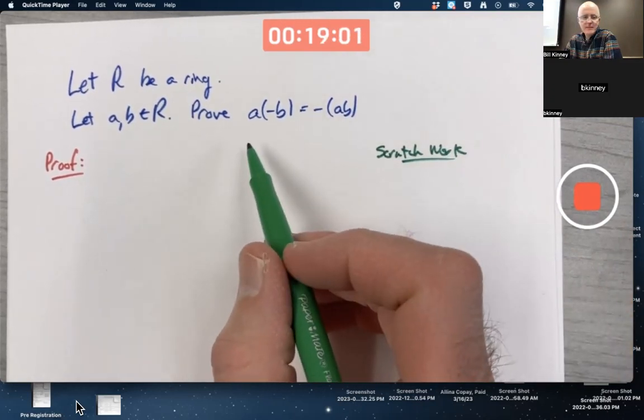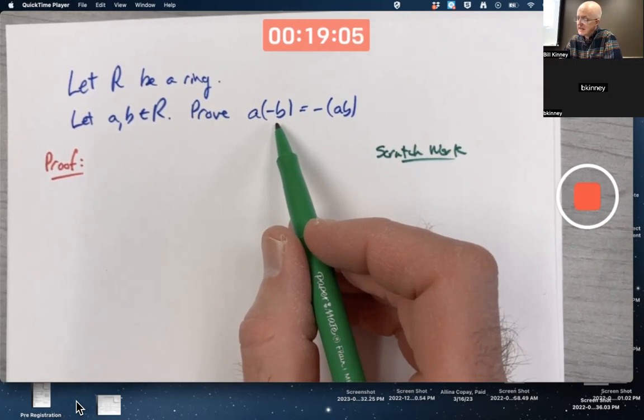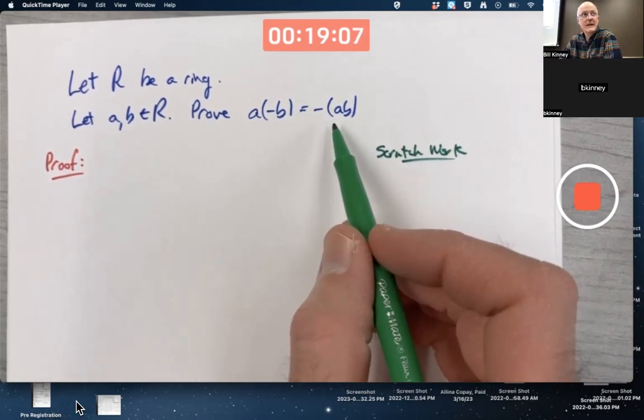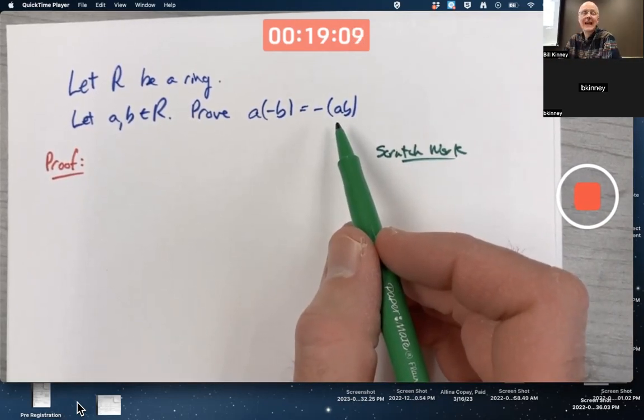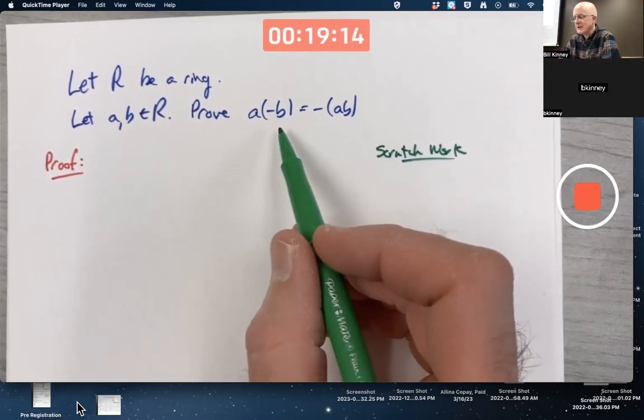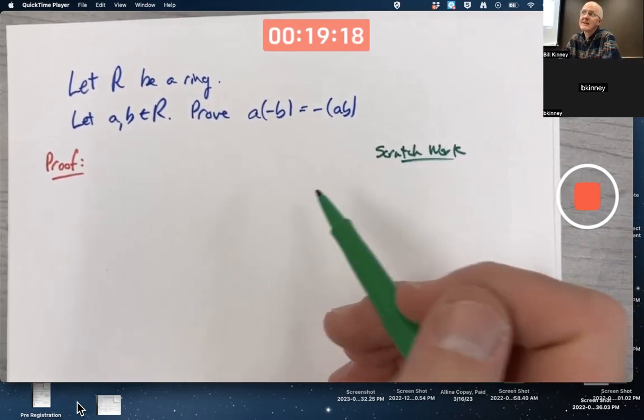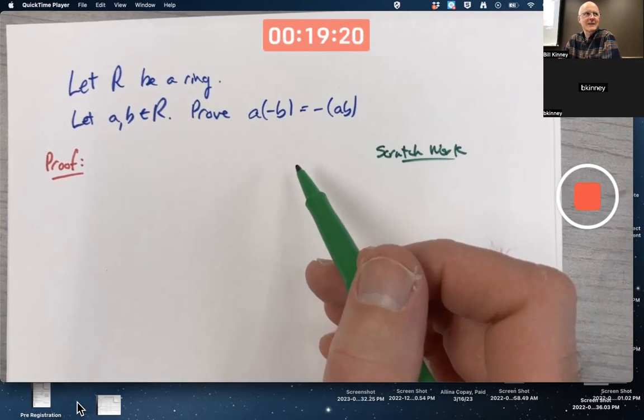We're trying to prove that if A and B are elements of a ring, then A times the additive inverse of B is the additive inverse of A times B. You really should think in terms of that language in your mind, at least additive inverse. Yes, you could say negative B and negative of AB, but these are not necessarily numbers.